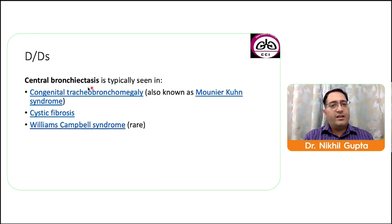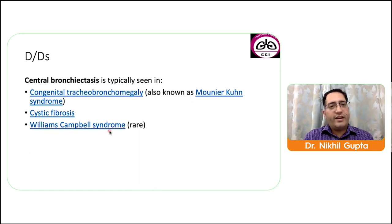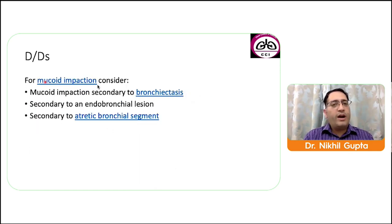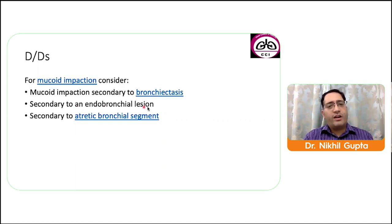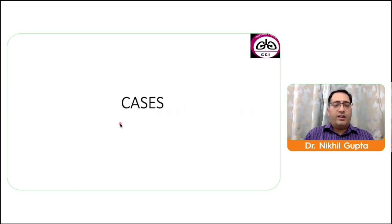Differential diagnoses for central bronchiectasis include congenital tracheobronchiomegaly (Mounier-Kuhn syndrome), cystic fibrosis, and Williams-Campbell syndrome. For mucoid impaction, differentials include mucoid impaction secondary to bronchiectasis of any cause, secondary to endobronchial lesion, and secondary to atretic bronchial segment.